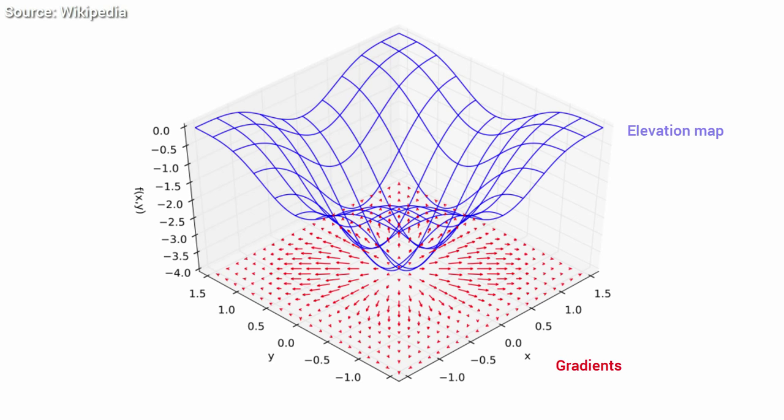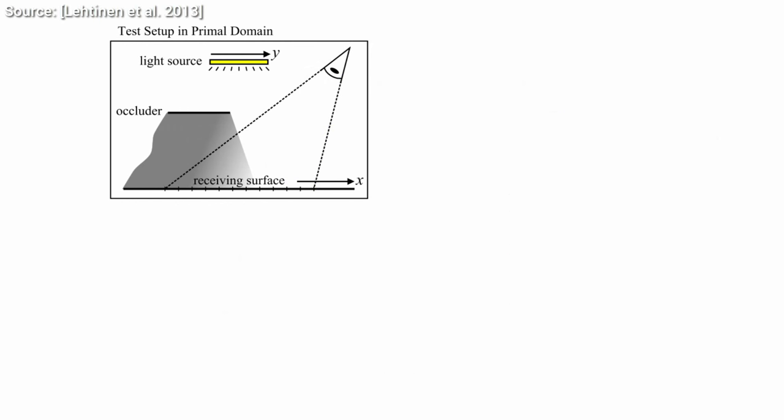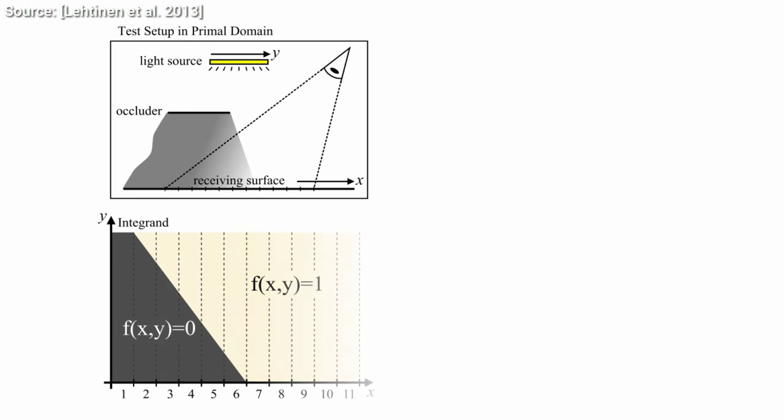To see what this is good for, let's jump right into the gradient domain renderer. Imagine that we have this simple scene with a light source, an object that occludes the light source, and the camera looking down on this shadow edge. Let's rip out this region and create a closeup of it.